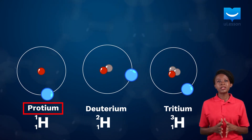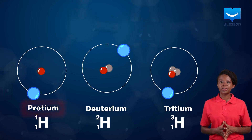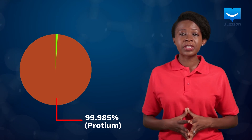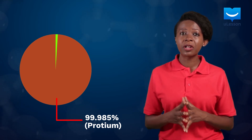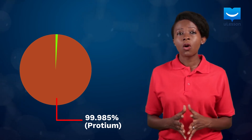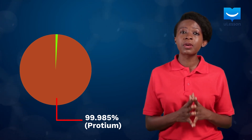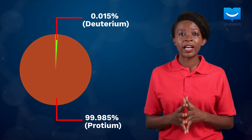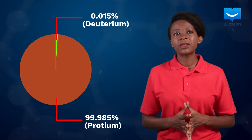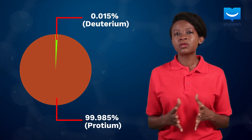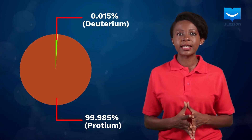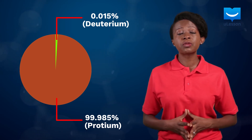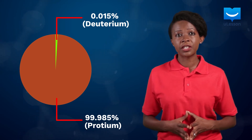Protium is the most abundant isotope of hydrogen. It constitutes about 99.985% of a sample of hydrogen, while deuterium constitutes the remaining 0.015%. Tritium, on the other hand, is rarely found in a sample of hydrogen due to its radioactive nature.